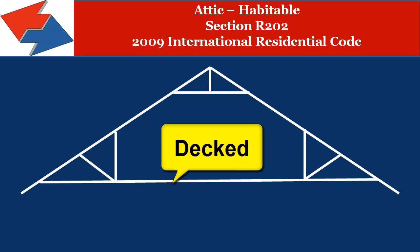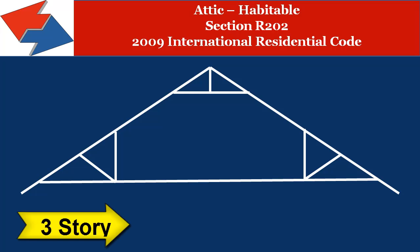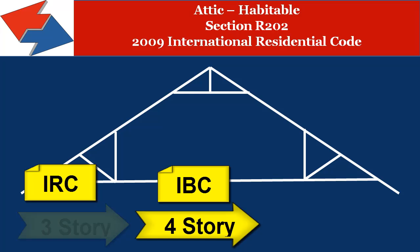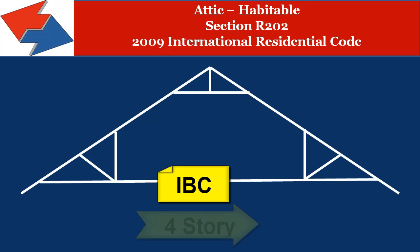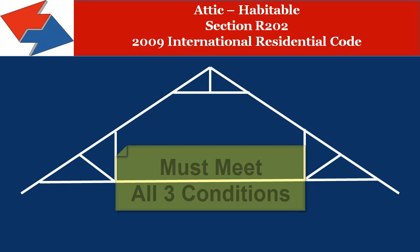In the previous codes, basically if the attic's floors were decked, the attic was considered another story, which could present real problems in an existing three-story house. Once they decked the attic in the previous codes, this existing three-story house now became a four-story house and reverted to the requirements of the 2006 International Building Codes and not the 2006 International Residential Codes.